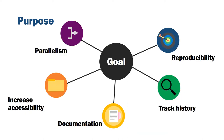When we work with 16S analysis or amplicon-based community analysis, we want, as with other bioinformatic processes, the following features: reproducibility, the ability to track history, good documentation, increasing accessibility to all users, and something that scales and is able to be parallelized.